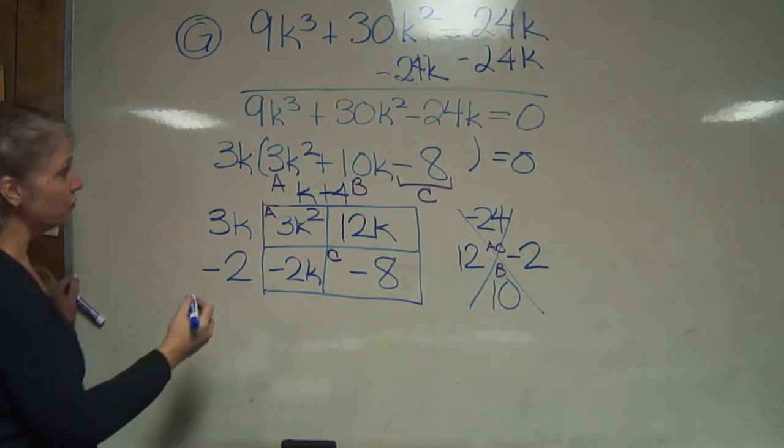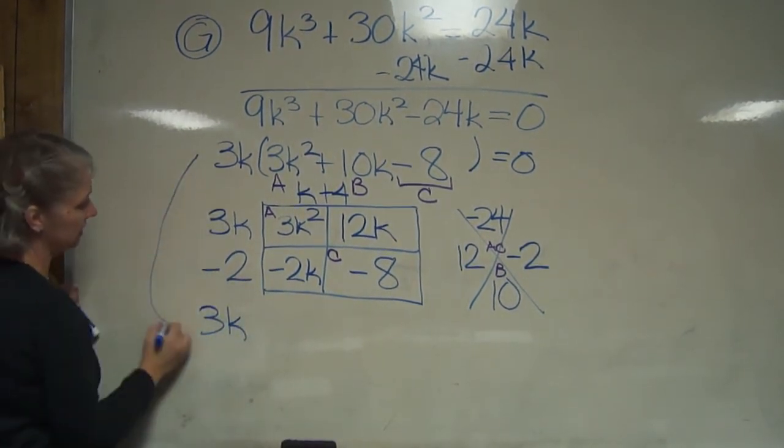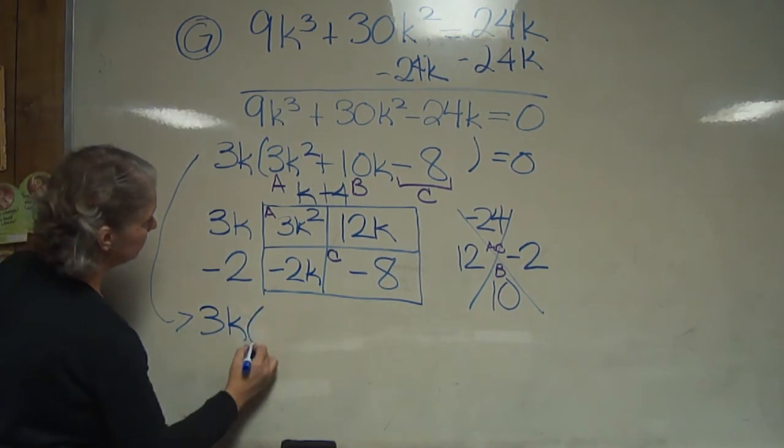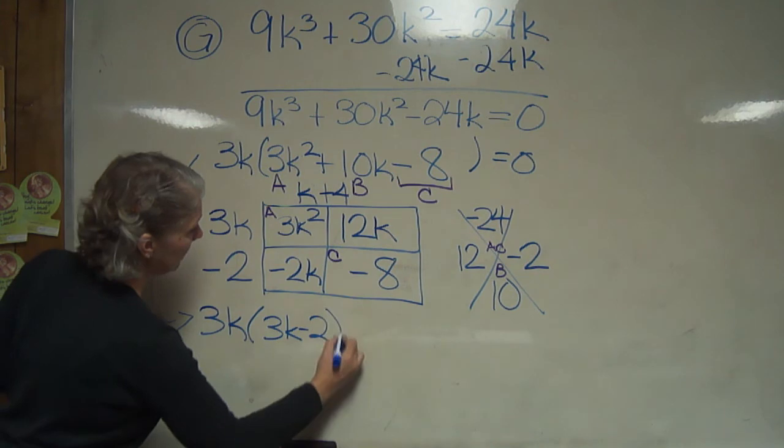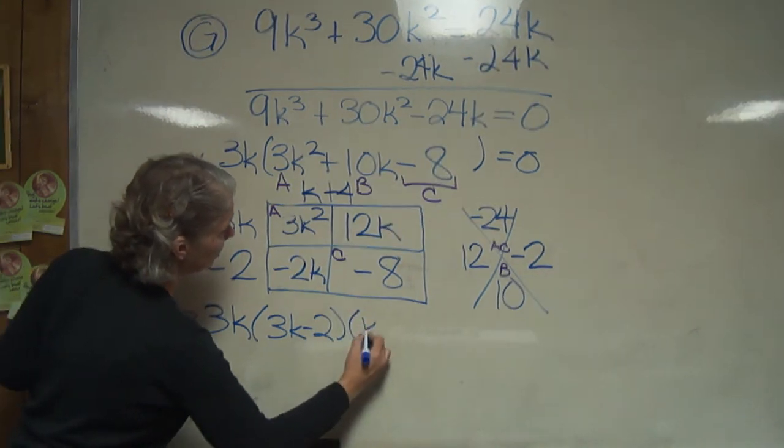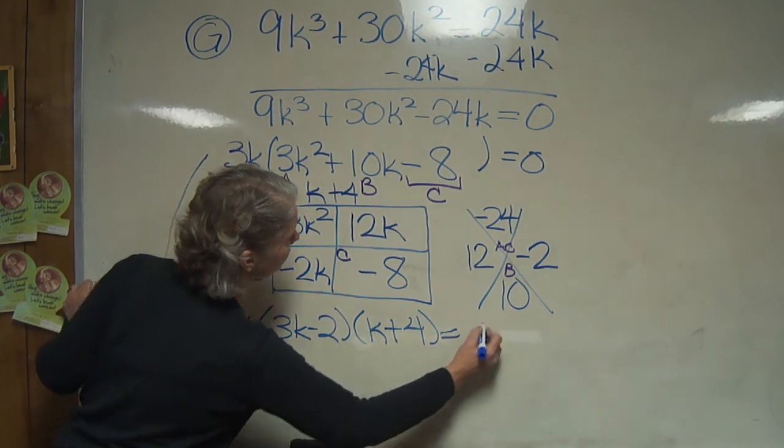So the factors we're worried about are - remember this very first one we need to bring down - 3k, 3k - 2, and k + 4. And remember all of those are equal to 0.